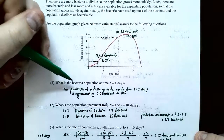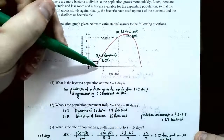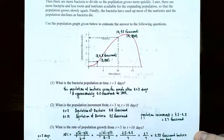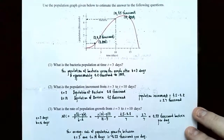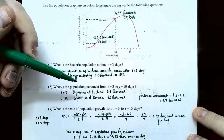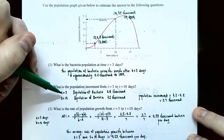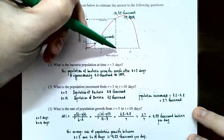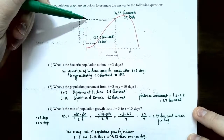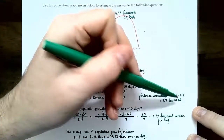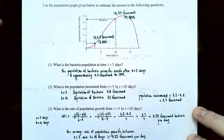Part one: at t equals three days, tracing up to the graph gives about 0.8 thousand, so approximately 800 bacteria. Part two: the population increment between t equals three and t equals ten days. At t equals three the population was 0.8 thousand; at t equals ten days, tracing the graph gives about 4.5 thousand or 4,500. The population change is 4.5 thousand subtract 0.8 thousand — 3.7 thousand, or 3,700 bacteria between three and ten days.